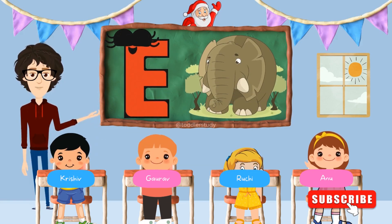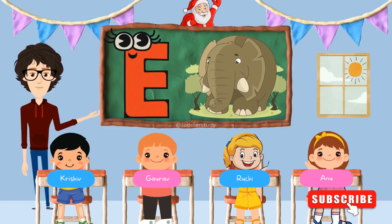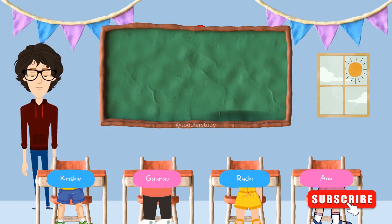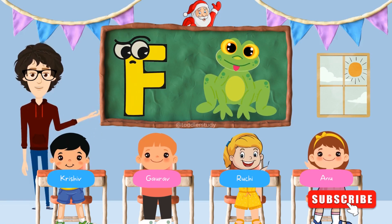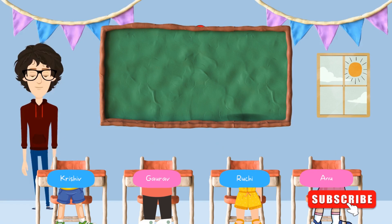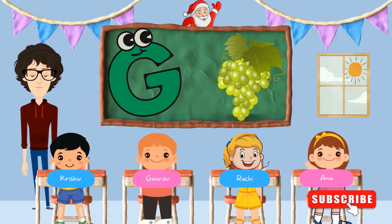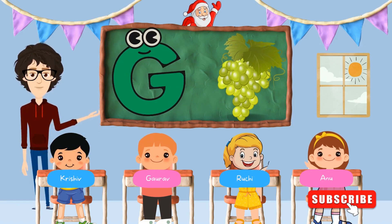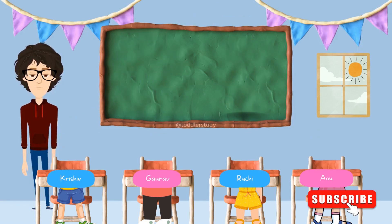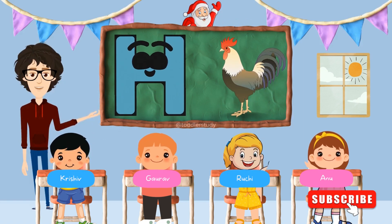E for Elephant. F for Frog. G for Grapes. H for Hen.